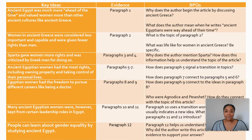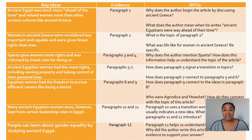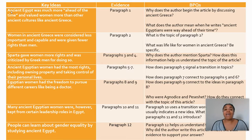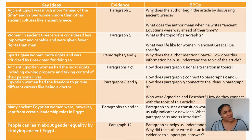Paragraph one talked about how ancient Egypt was much more ahead of its time and valued women more than other ancient cultures. Paragraph two, we saw that women in ancient Greece were considered less important or less capable and were given fewer rights. Paragraphs three and four, we saw that Sparta gave women more rights, and because of that, they were criticized by the Greek men for doing so.